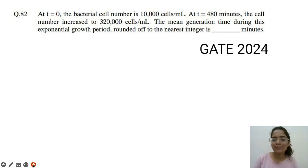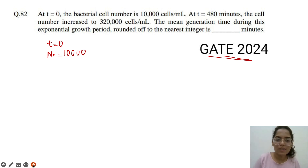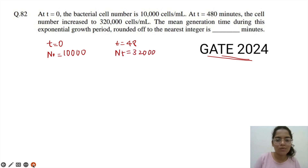Let us start with numericals. Let us first look at a recent GATE paper — GATE 2024 question. It was told that at time t = 0, the cell number N0 is 10,000. And at time t = 480 minutes, the cell number increased to 32,000, so Nt = 32,000. The mean generation time during this exponential growth period, rounded off to the nearest integer, is asked.